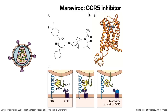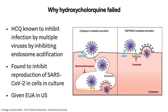Maraviroc is a small molecule that binds into CCR5 — shown in the crystal structure with CCR5 in orange and maraviroc in blue — preventing gp120 from binding. HIV can still bind CD4 but cannot bind CCR5, so entry is blocked. Of course resistance arises to that one as well.